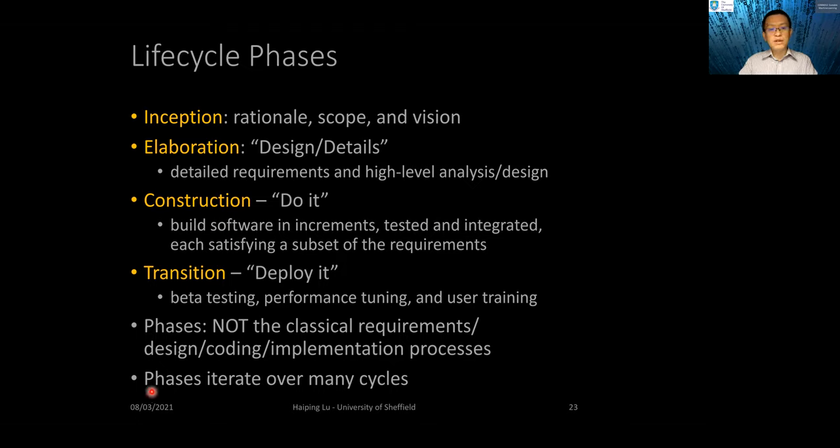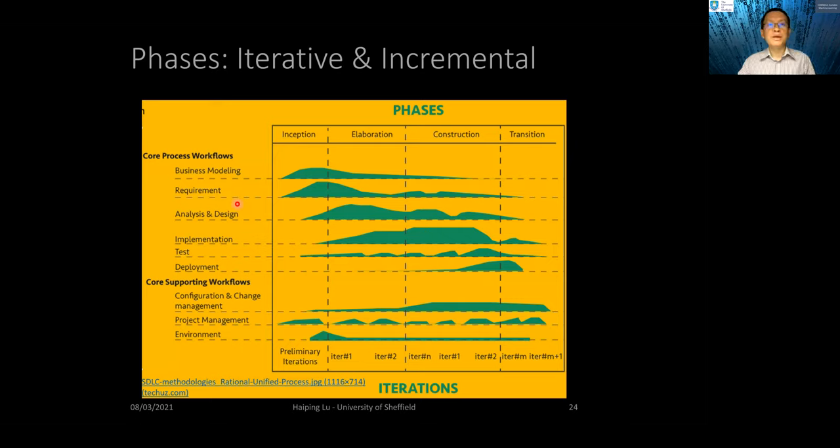And the phases will also iterate over many cycles. Here is a nice picture showing the different phases and also the iterative part and the incremental development. Here is the classical traditional workflow. For process workflows, you have a business model for your requirements and do analysis and design and implement, test and deployment.